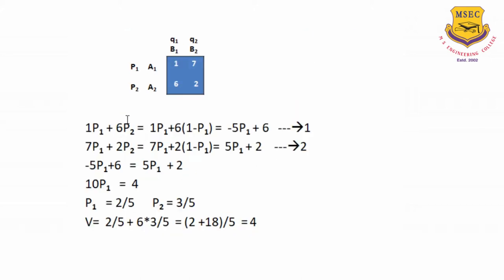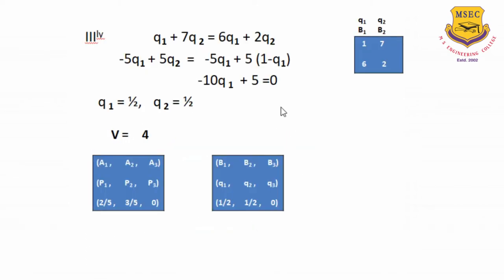Once we get this 2x2 matrix, we compute P1, P2 and Q1, Q2, which are the probabilities associated with A playing A1 and A2 strategies, and B playing B1 with probability Q1 and B2 with probability Q2. We multiply the probabilities: 1 into P1 plus 6 into P2 must equal 7 into P1 plus 2 into P2. Solving, we get P1 equals 2/5 and P2 equals 3/5. The value of the game is 4. Similarly, we calculate Q1 and Q2 from the reduced matrix: 1 into Q1 plus 7 into Q2 equals 6 into Q1 plus 2 into Q2. Substituting Q2 equals 1 minus Q1, we determine Q1 equals 1/2, Q2 equals 1/2, and the value of the game equals 4.